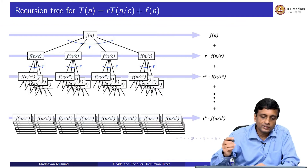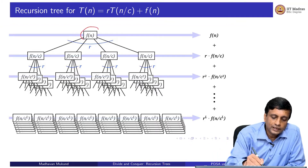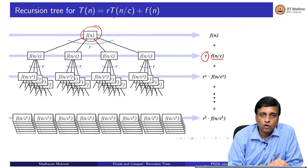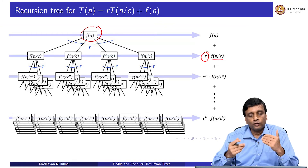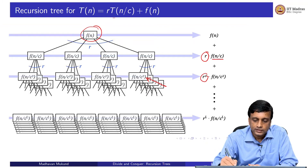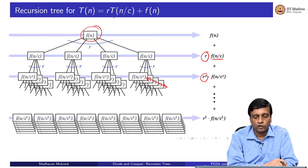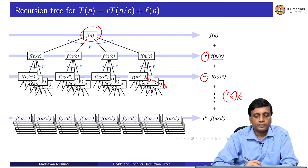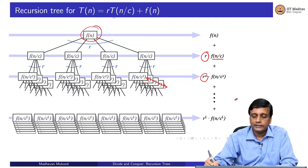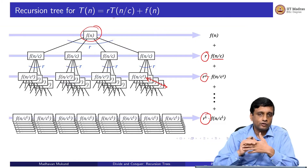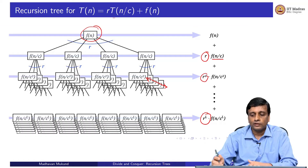In this recursion tree, the root is labeled f(n). At level 1 we have r nodes each with input size n/c. At level 2 we have r² nodes each with input size n/c². At the bottom level L, we have r^L nodes each at the base case. The number of levels L is log_c(n), since we keep dividing by c until we reach size 1.